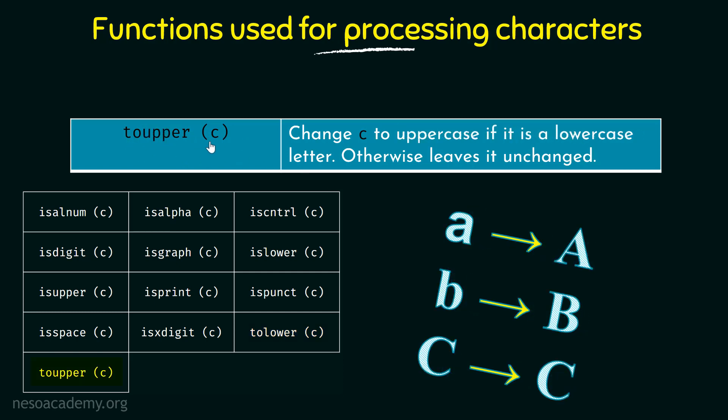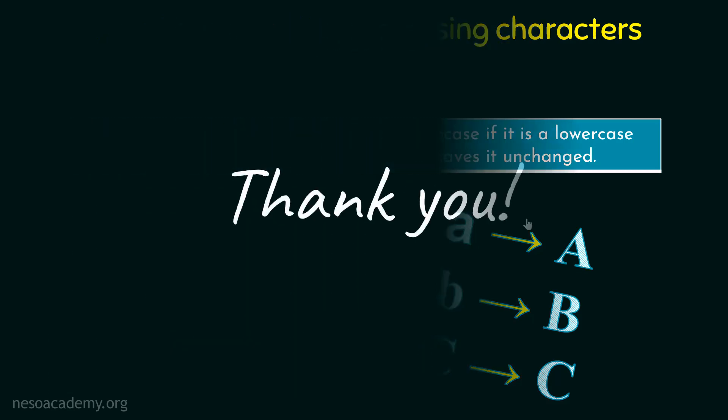Next we have TOUPPER, which changes C to uppercase if it is a lowercase letter, otherwise leaves it unchanged. If it is a lowercase letter it converts it to an uppercase letter, and if it is already uppercase then it is left unchanged. Those were some of the functions used for processing characters in a string. In the next lectures we will take examples and see how we make use of these functions in programs to process characters in strings.